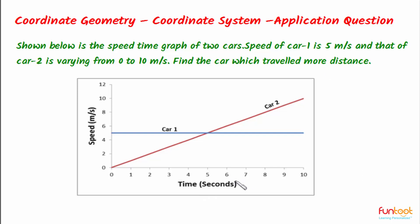If we see in the graph, as we move along the time axis, speed of car 1 remains constant at 5 meters per second whereas speed of car 2 increases from 0 to 10 meters per second. We will find out which car travels more distance.